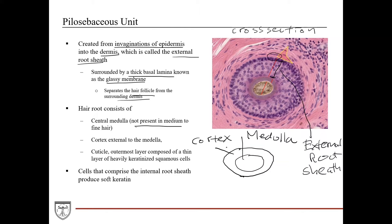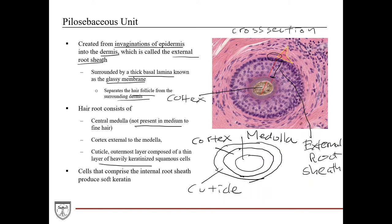External to the cortex is the cuticle, the outermost layer, which is composed of a thin layer of heavily keratinized squamous cells. In the diagram shown, this is either a medium or a fine hair, so there is no medulla — just cortex — and surrounding it is the heavily keratinized cuticle. The cells comprising the internal root sheath produce soft keratin that will eventually harden to produce hard keratin as the keratinocytes at the bulb of the hair follicle undergo the keratinization process, similar to the epidermal layer, to produce the shaft of the hair.